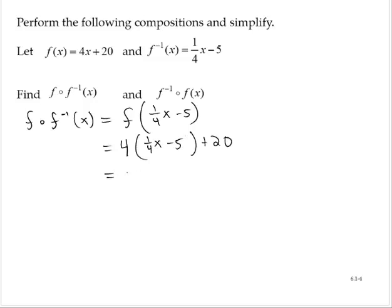Distributive property gives us 4 times 1 fourth is 1, 1 times x is x. 4 times negative 5 is negative 20 plus 20 equals x. So f compose f inverse of x is x.